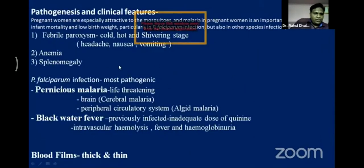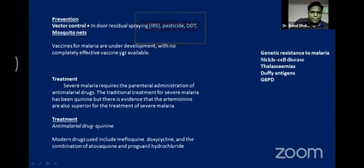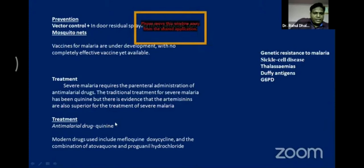Pathogenesis of malaria: the patient experiences bad fever — malaria fever. Life-threatening complications include cerebral malaria. Black water fever can occur in previously infected patients who received inadequate doses of quinine. For diagnosis: take thick and thin blood films and observe for the malarial parasite. Prevention: vector control using mosquito nets and insecticide pellets. Treatment: chloroquine, mefloquine, doxycycline.